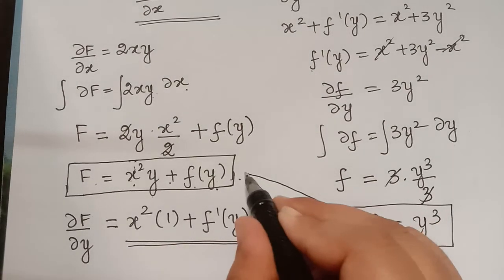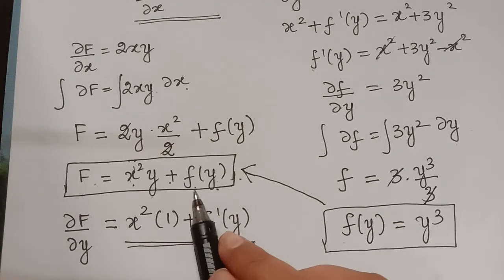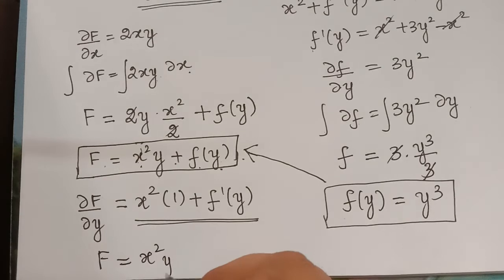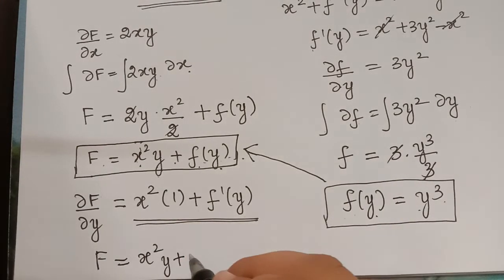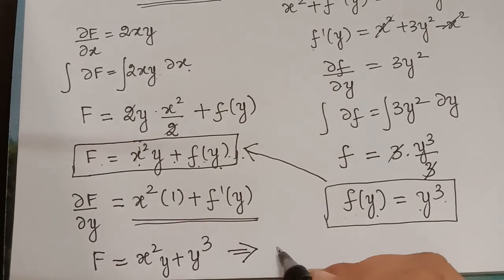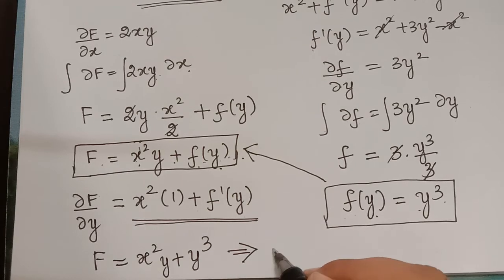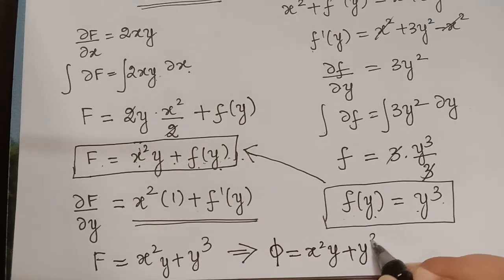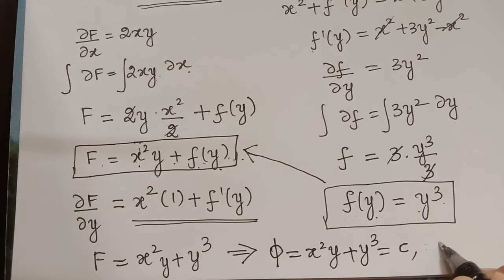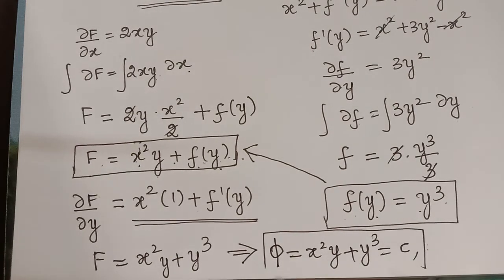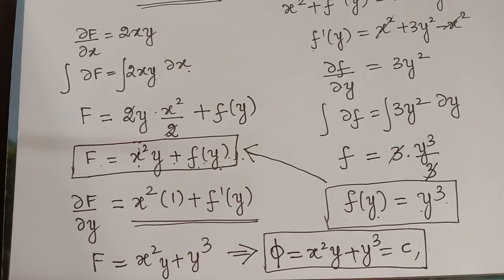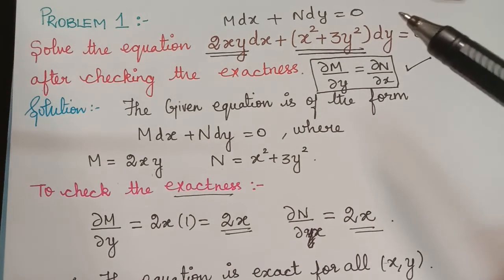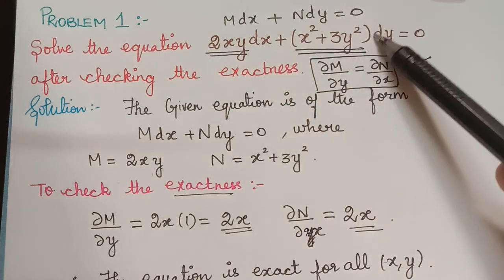Now we substitute f(y) equals y cubed back into F equals x squared y plus f(y). Therefore, the solution is F equals x squared y plus y cubed equals constant c. This is the solution of the given exact equation. This is how we solve an exact equation of the form M dx plus N dy equals 0.